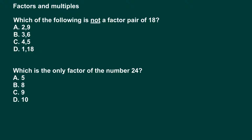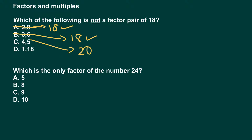Which of the following is not a factor pair of eighteen? Two times nine is eighteen, so it is a factor pair — that can't be the answer. Three times six is eighteen, so it is a factor pair — that cannot be the answer. Four times five is twenty, so that is not a factor pair of eighteen — that is the answer. And just to confirm, one times eighteen is eighteen, so obviously that cannot be the answer either.